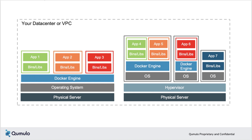Docker container-based services can absolutely interact with VMware-based services — running your application in Docker containers doesn't preclude it from talking to services running in a VM. There can also be synergy between VMs and Docker containers in capacity optimization. VMs gained early popularity because they enabled higher levels of server utilization. By mixing and matching Docker hosts with traditional VMs, sys admins can be assured they are getting maximum utilization out of their physical hardware.